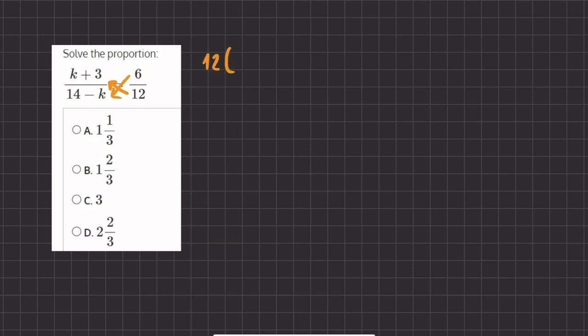We're going to have 12 times k plus 3 equals 6 times 14 minus k. Now we can distribute this value into our parentheses, and same for the 6.